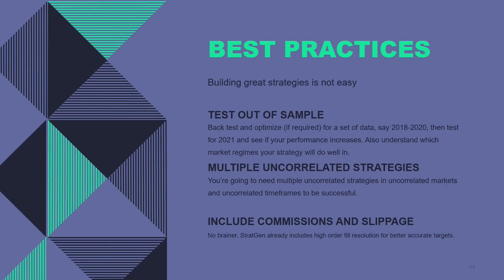On top of that, test it with new data. If you're back testing 2018 to 2020 and it looks good after optimization, then try back testing in 2021 or 2022. If the results are worse or the same, your strategy is most likely overfit. If it performs better, that's a good sign you have a robust strategy.